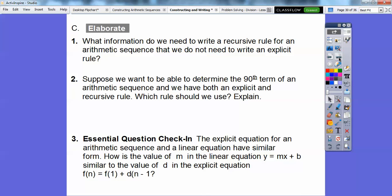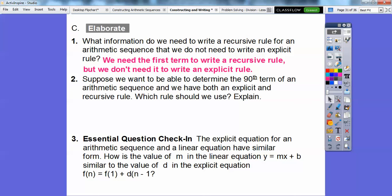Let's answer a few questions and then we'll wrap it up. What information do we need to write a recursive rule for an arithmetic sequence that we do not need to write an explicit rule? We need the first term in a recursive rule, but we don't need that in the explicit rule. We always need it in the recursive rule. Everything depends on the term before that in a recursive rule.